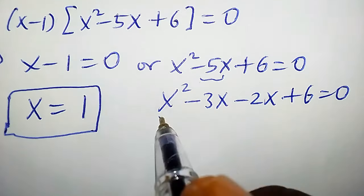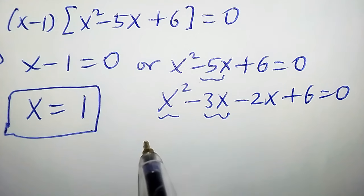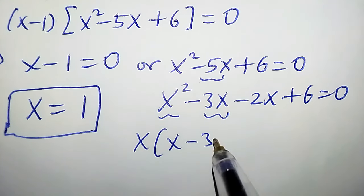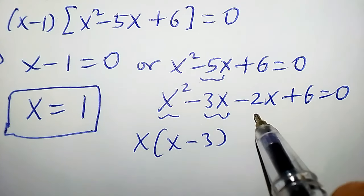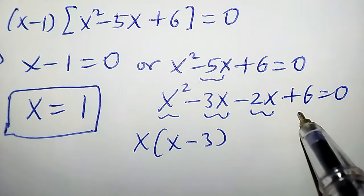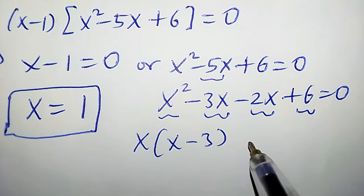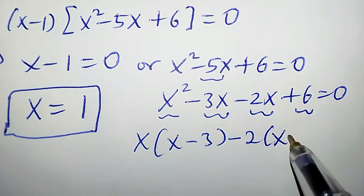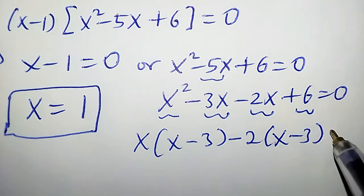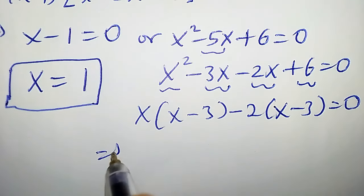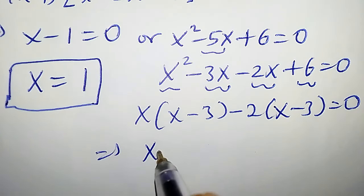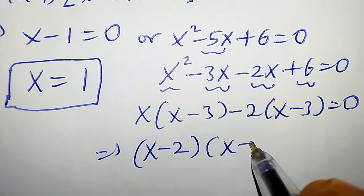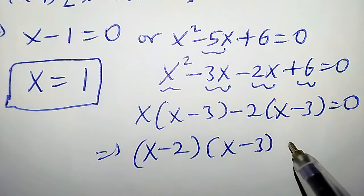x is the common factor in the first pair, so we pull out x to get x(x - 3). -2 is the common factor in the second pair, so we pull out -2 to get -2(x - 3) = 0. This gives us (x - 2)(x - 3) = 0.